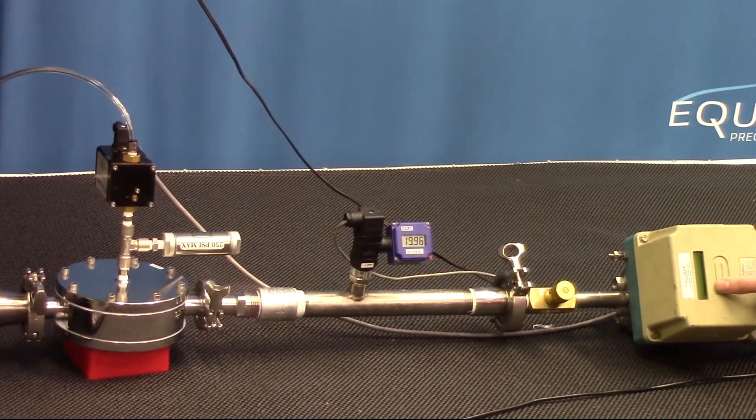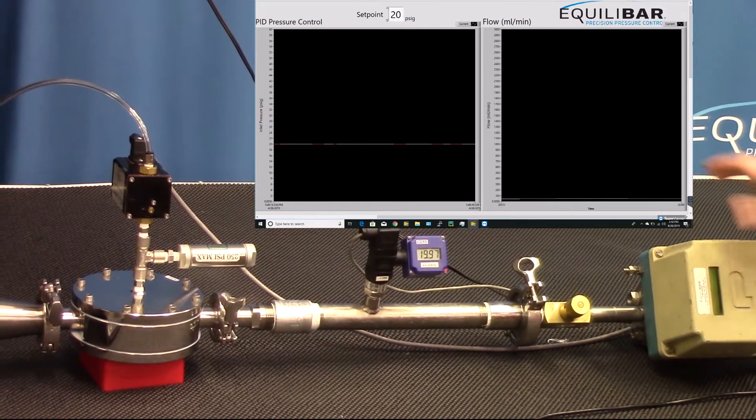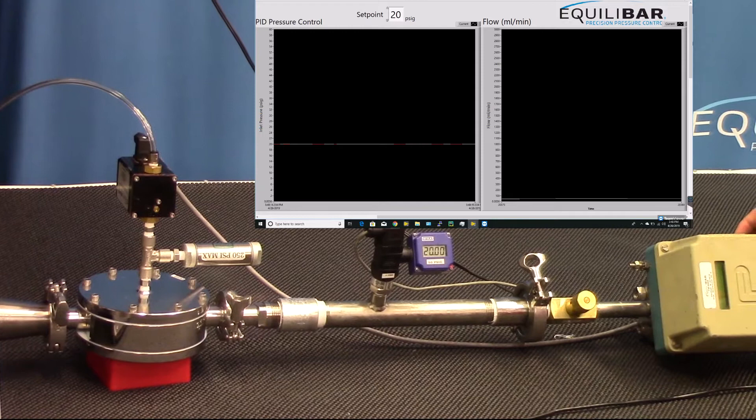To begin, we will start at approximately 35 milliliters per minute of liquid flow, and we can see the inlet pressure gauge is reading almost exactly 20.00 psi.